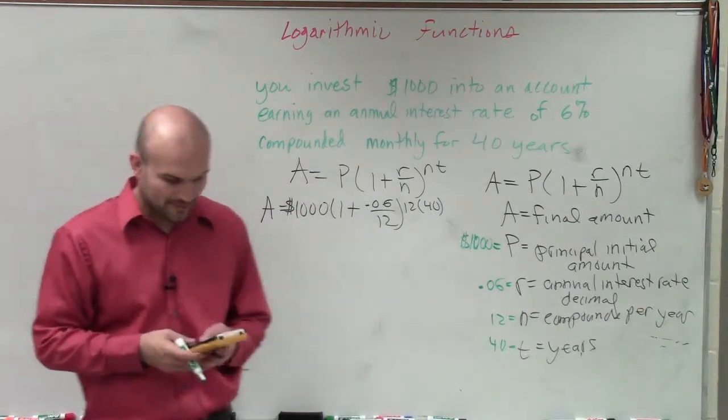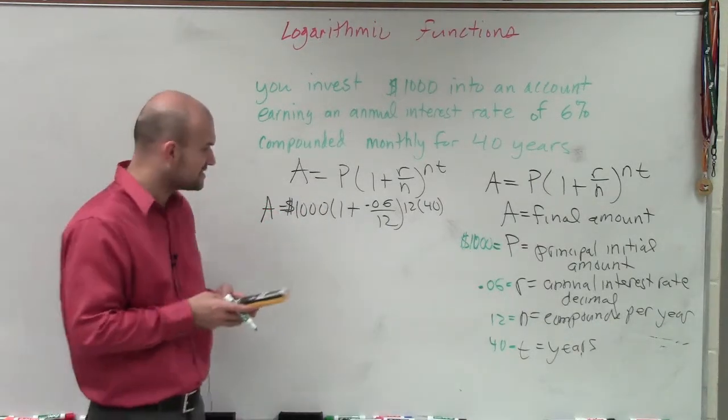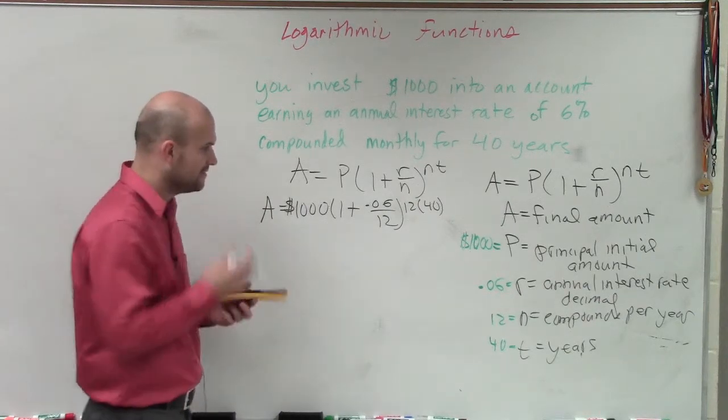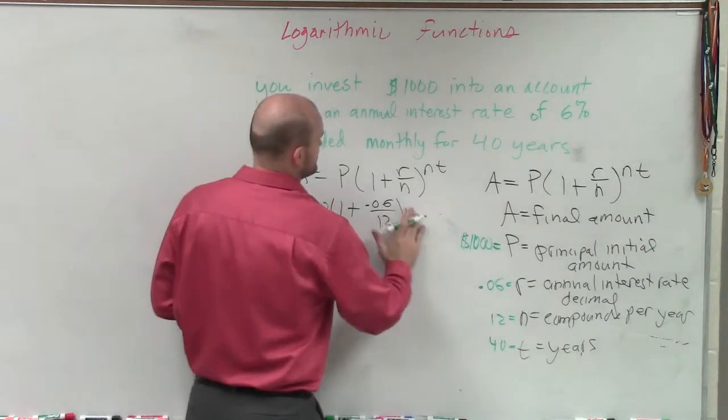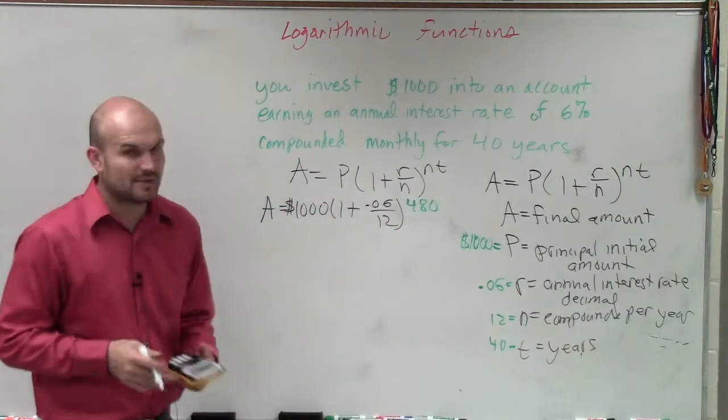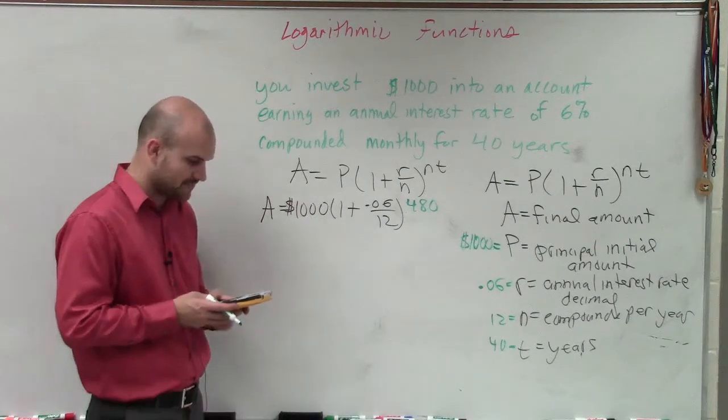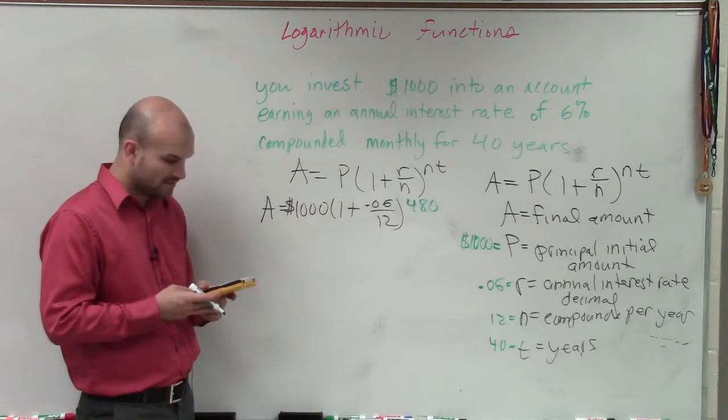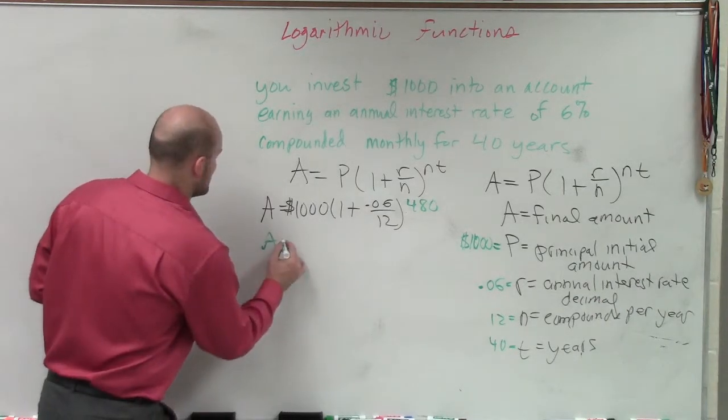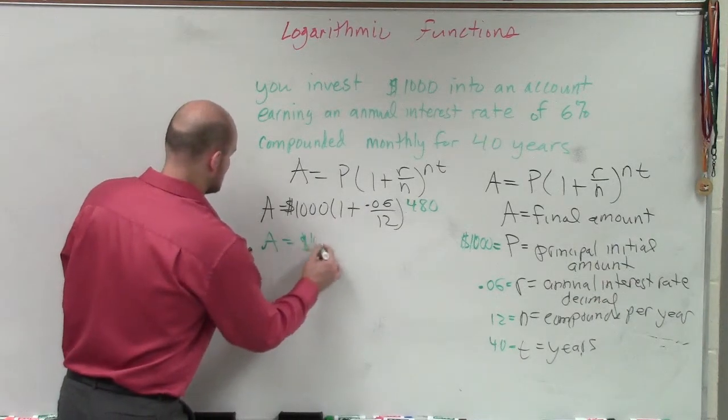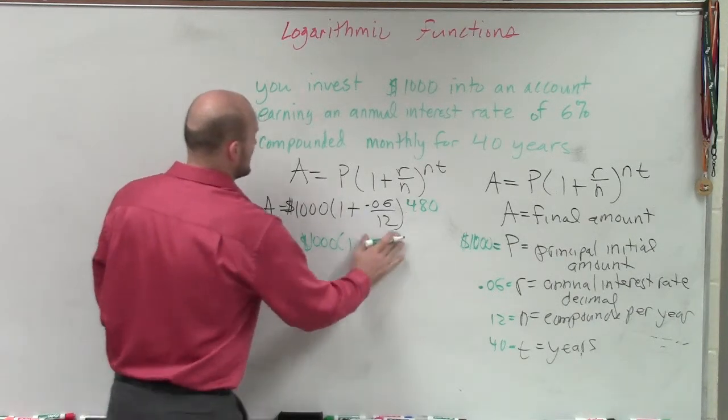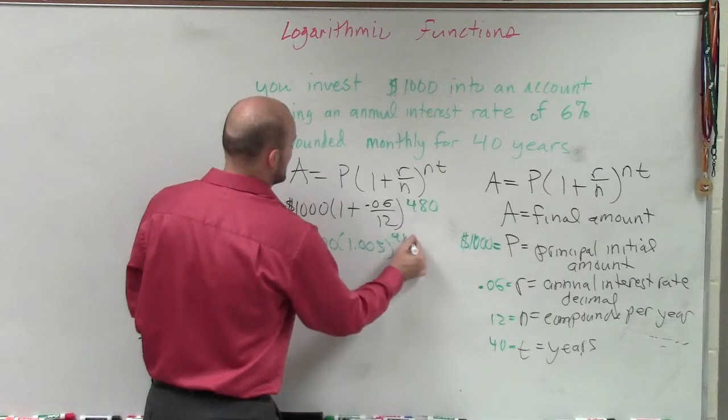So to apply order of operations, the first thing I need to do inside my parentheses—well, I can do 12 times 40 first, so that's 480. Let's just rewrite that as 480. All right, so now by applying order of operations inside, I'll do 0.06 divided by 12 plus 1. So therefore, I now have A equals $1,000 times 1.005 raised to 480.